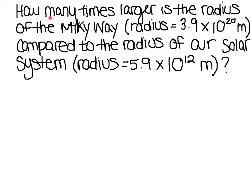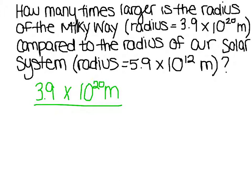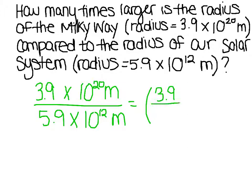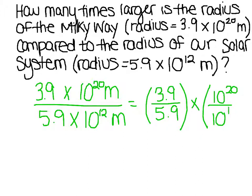The first thing you should notice is they're asking how many times larger. So we want to know what number can we essentially multiply by the smaller radius to get the larger radius. Looking at our exponents, we know our solar system is a lot smaller. So what can I multiply our solar system by to get the radius of the Milky Way? Hopefully you're saying to yourself: I need to divide. So I'm going to have 3.9 times 10 to the 20th meters divided by 5.9 times 10 to the 12th meters — the larger divided by the smaller. We're going to group our numbers together and our exponents together.